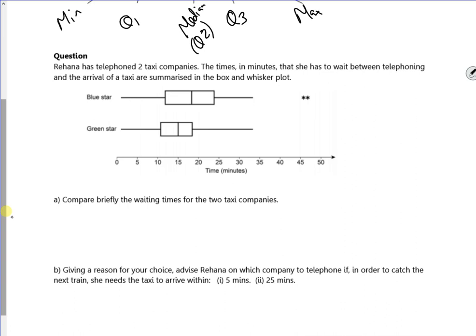So let's compare. So if we look, on average, Green Star has a lower waiting time. So we can say that. On average, Green Star has a lower waiting time as the mean is smaller.